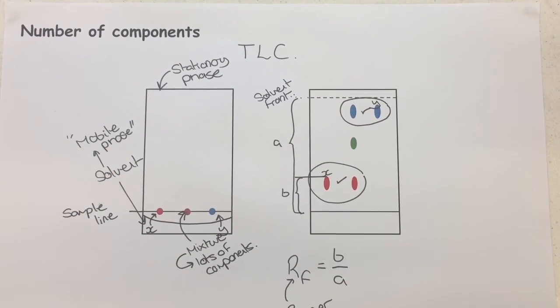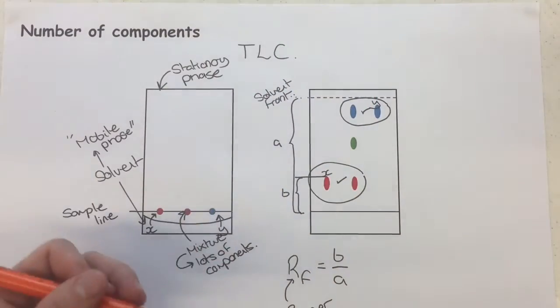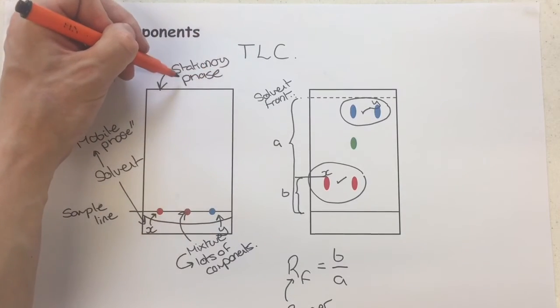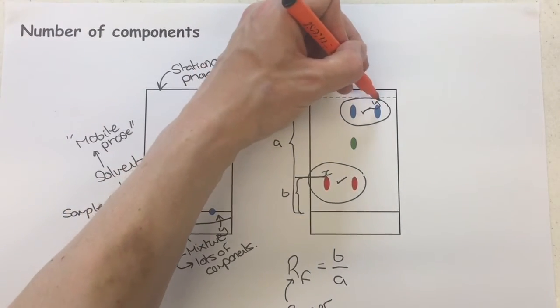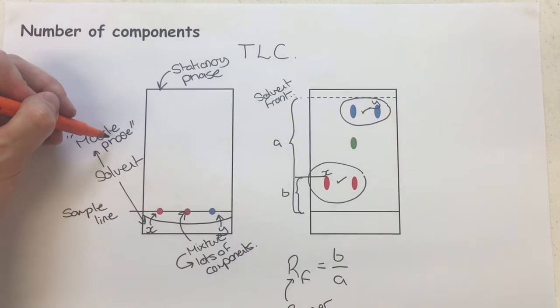Why has Y travelled further? Y has travelled further because of two main things that we need to consider: how attracted it was to the stationary phase, and how soluble it was in the mobile phase, which was a solvent in this case.